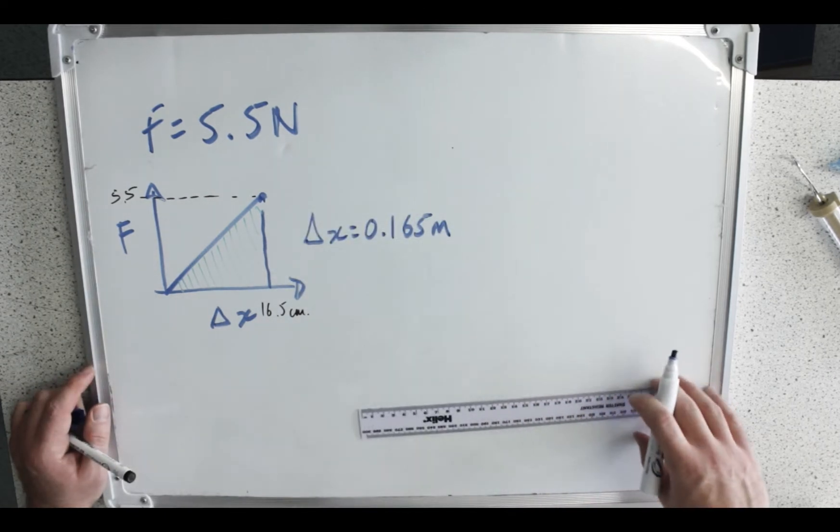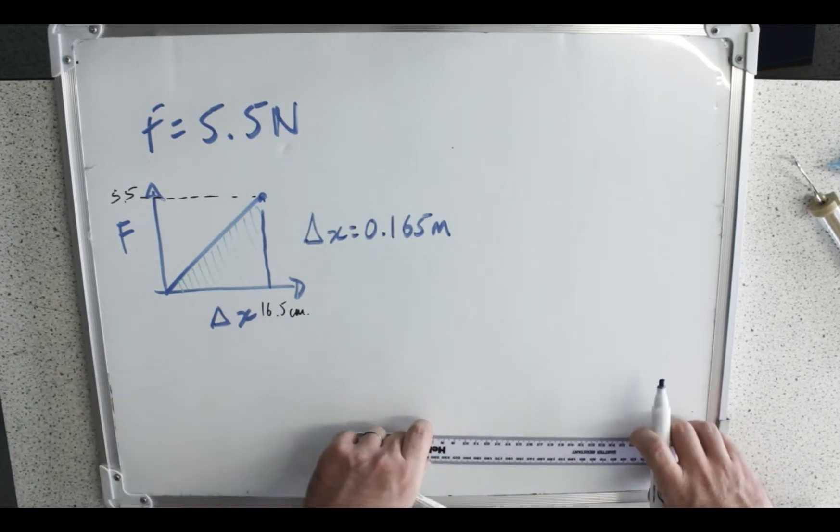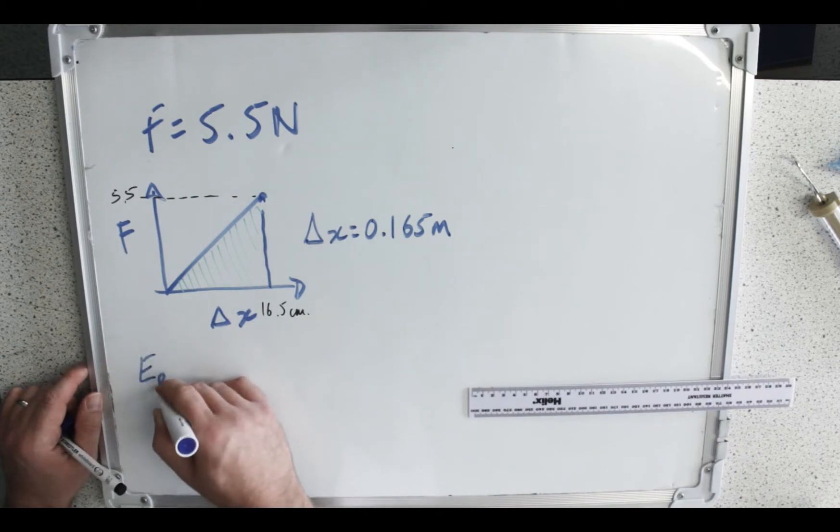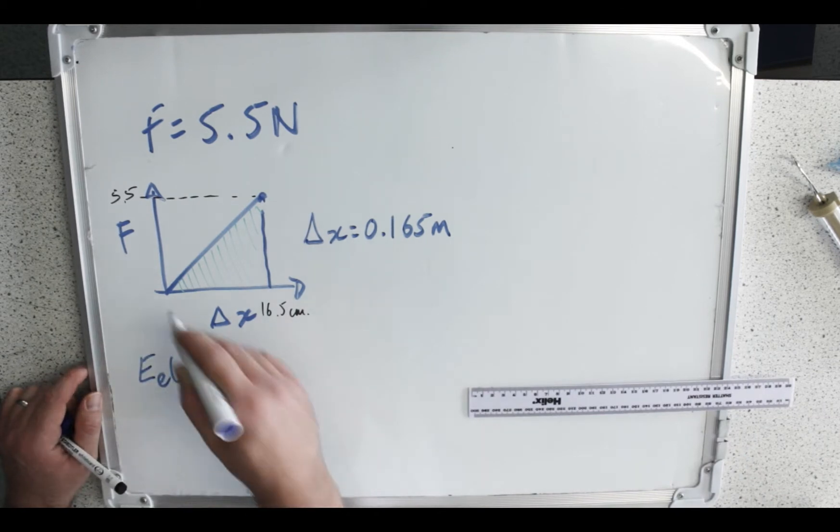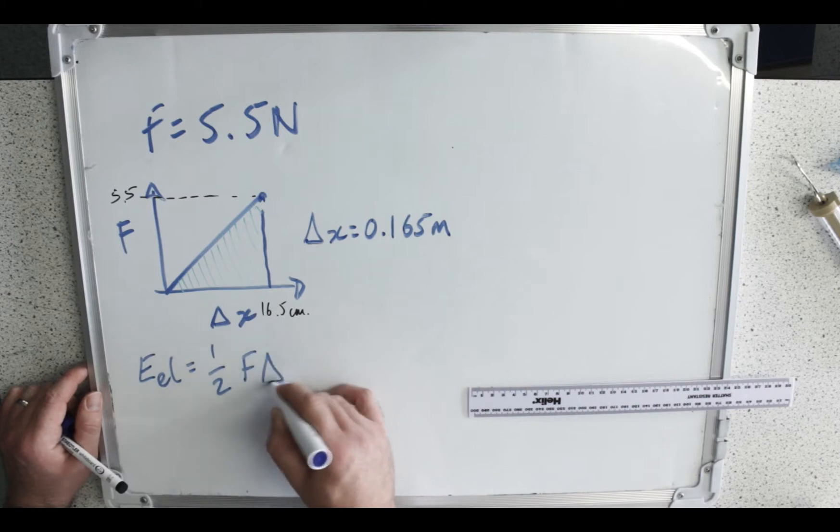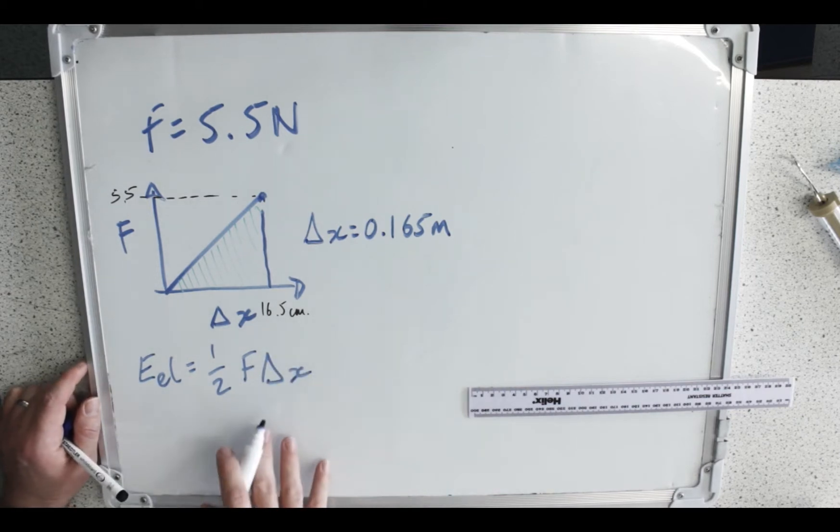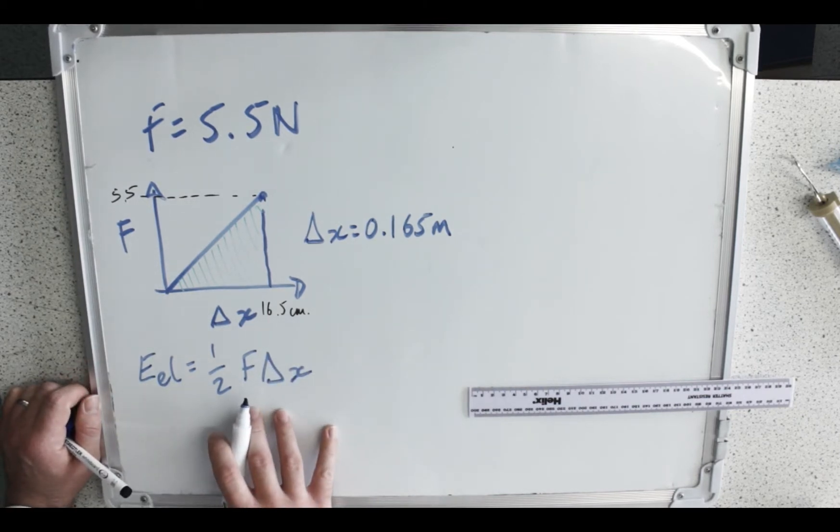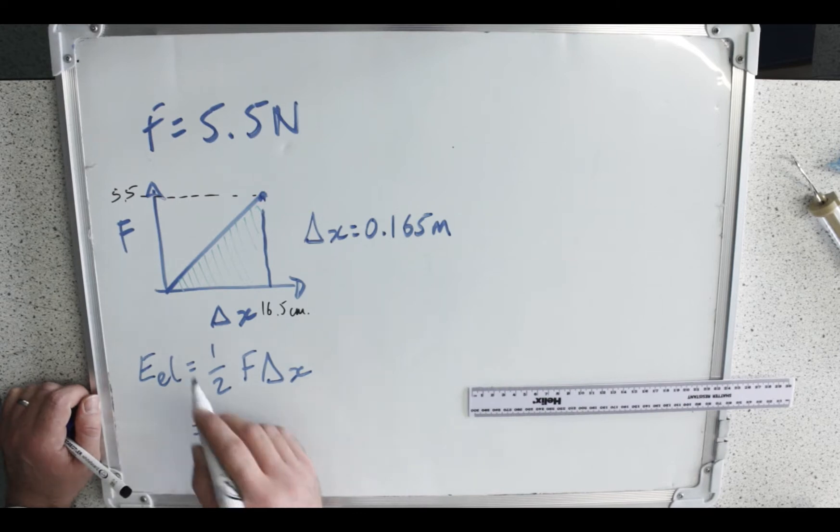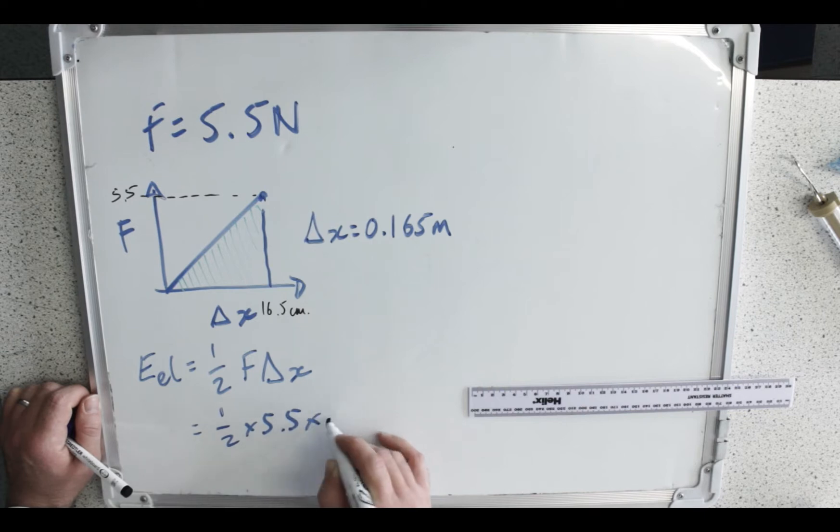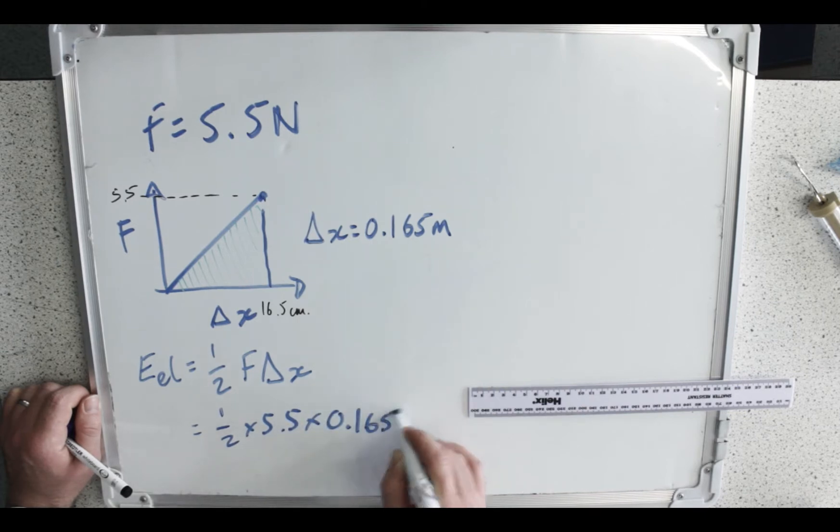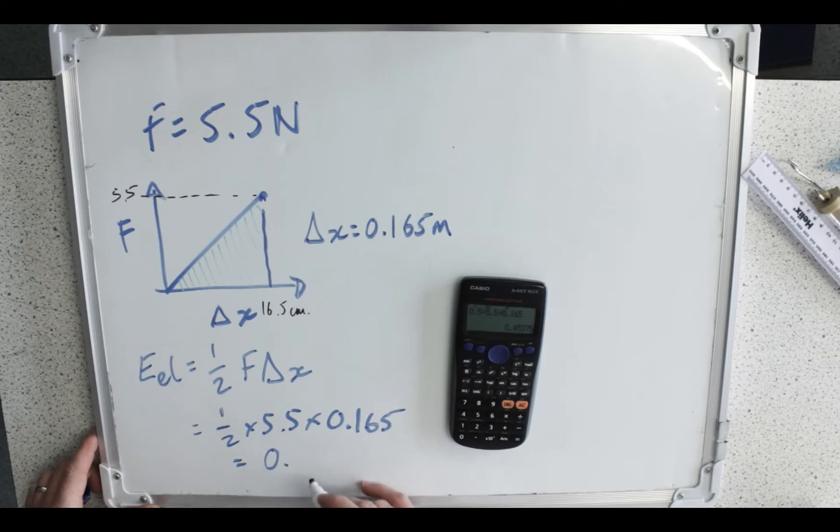And then if I do the area underneath that graph, which is a triangle, the elastic strain energy is a half times F times delta X. And this is actually an equation that we sometimes just remember for simplicity's sake. A half times 5.5 times 0.165 is equal to 0.45 Joules.